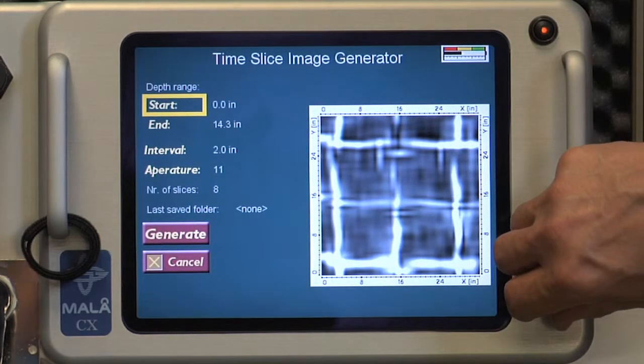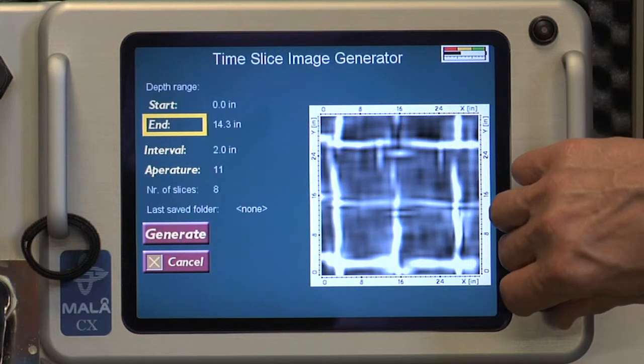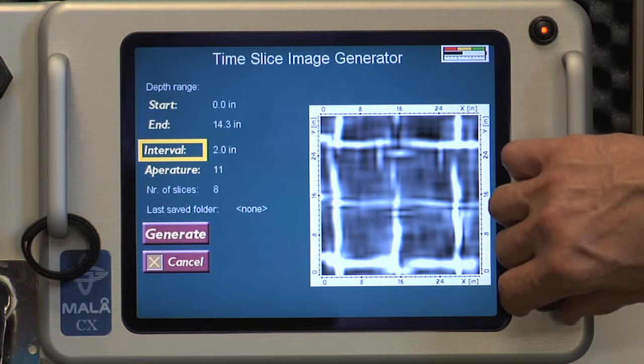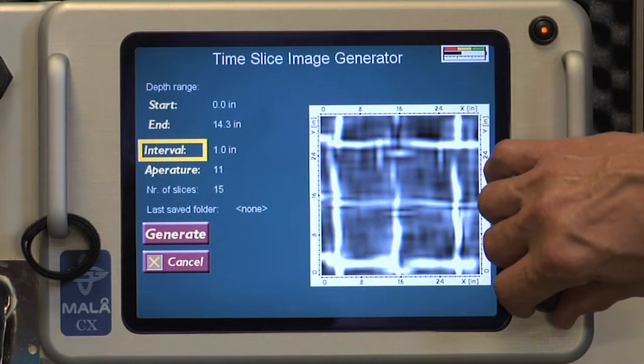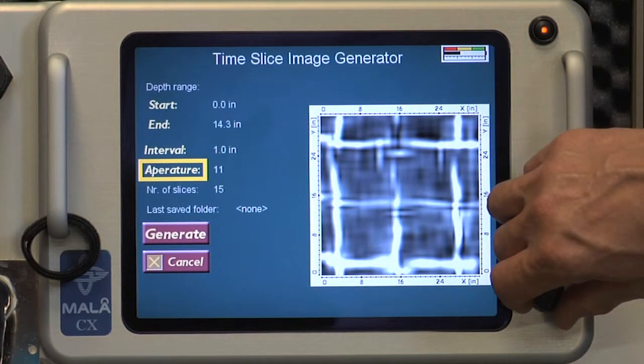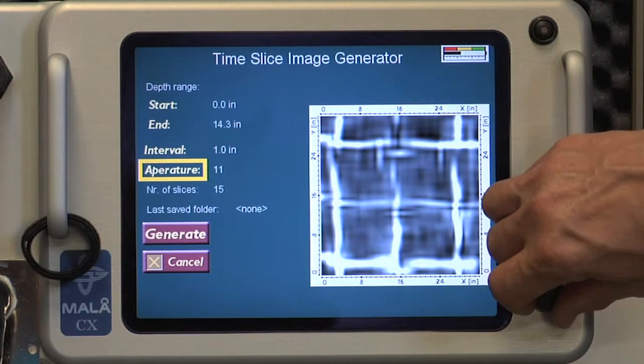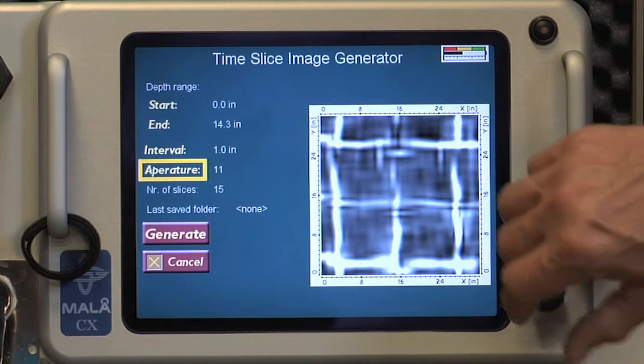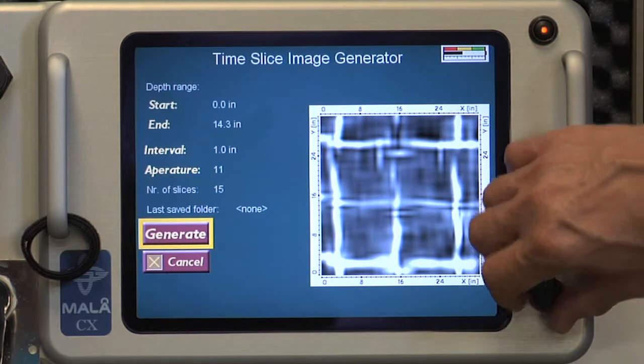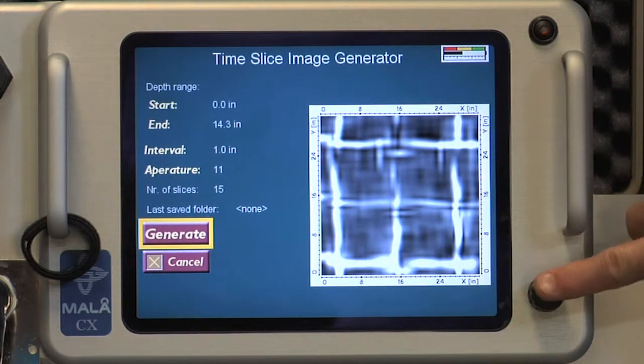Now select how much data is desired to image using the depth range setting. The entire data set or only sections can be selected. Input the number of depth slices to split the depth range into. Select the desired aperture to apply to each slice. Select Generate and the CX will automatically generate the images as a movie from the grid project.